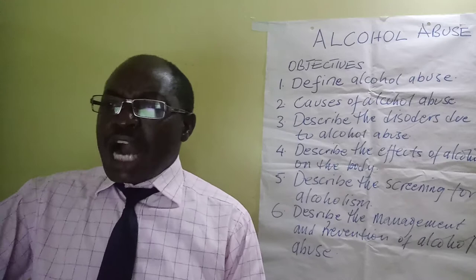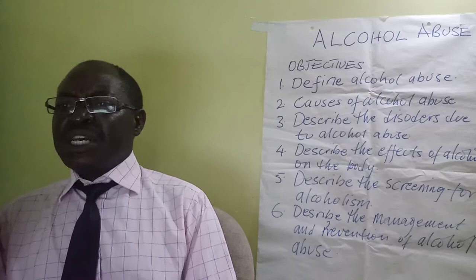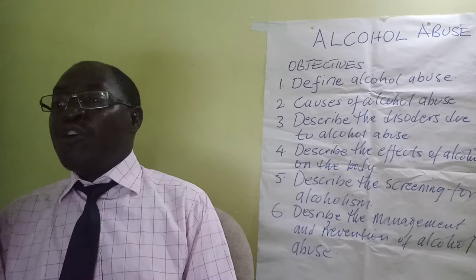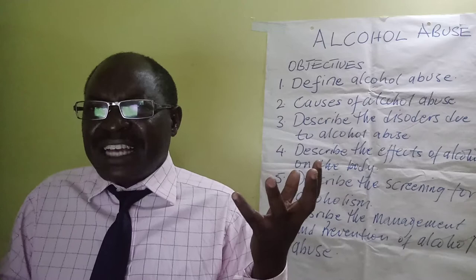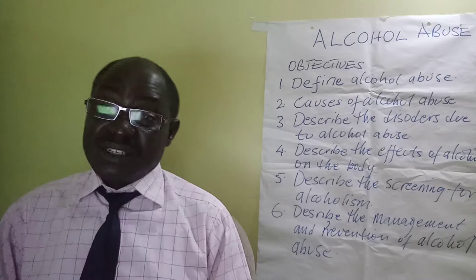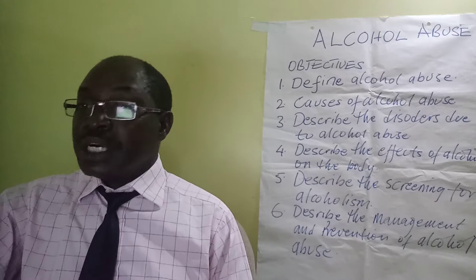Alcoholic paranoia is when the person develops a chronic psychotic condition dominated by systematized delusions of persecution. The person believes that because they are better than others, those people want to persecute them — feeling hunted or believing others are planning to hurt them.